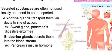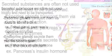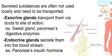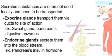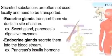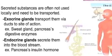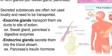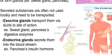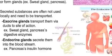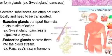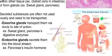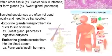Endocrine glands secrete substances into the bloodstream — hormones are good examples. The pancreas' insulin hormone is an example of that; it travels to cells to tell them to take up glucose. So the pancreas has both an endocrine part and an exocrine part — interesting.